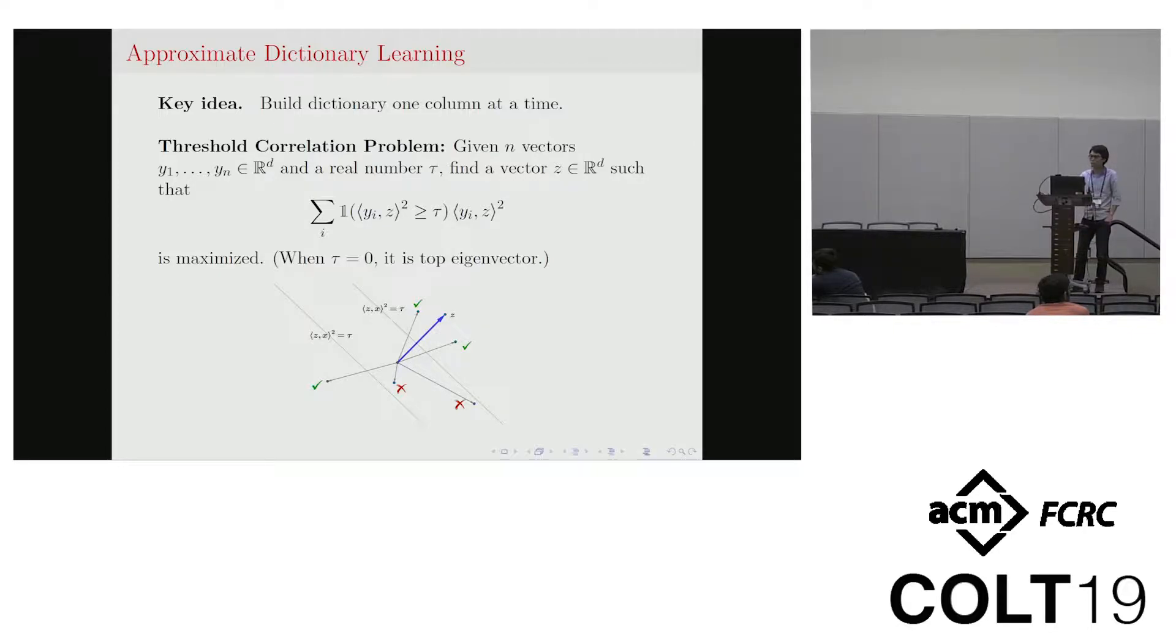So now let me introduce one other problem to you, we call it Threshold Correlation Problem. Basically this problem is: you are given n vectors and also a real number called threshold tau, and then we would like to find out a vector such that this expression is maximized. So actually you can view this problem as the generalization of top eigenvector problem, because if you set this threshold tau to be zero, you are basically trying to find out the top eigenvector. And here is a picture that shows how this problem is actually trying to compute.